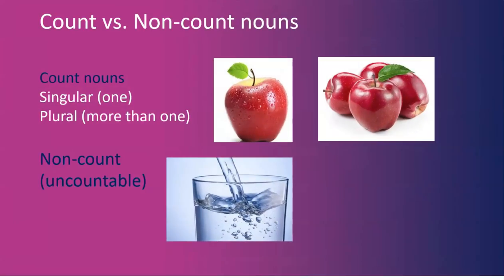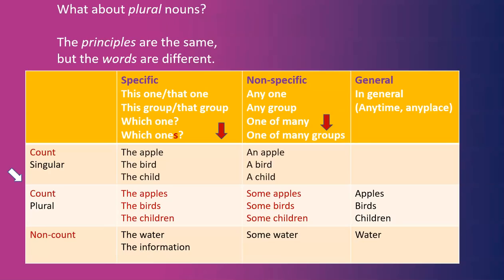Let's talk about count nouns versus non-count nouns. As we mentioned before, count nouns can be singular — just one — or plural — more than one. Non-count nouns are like water; sometimes we call them uncountable. Let's first talk about plural nouns, because we have some similarities here. The principles are the same, but the words are different.